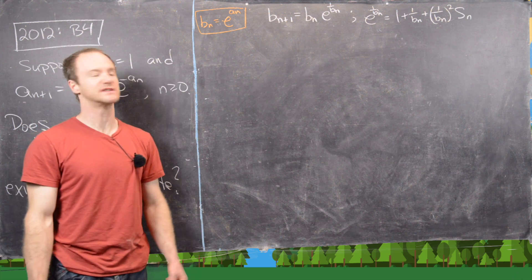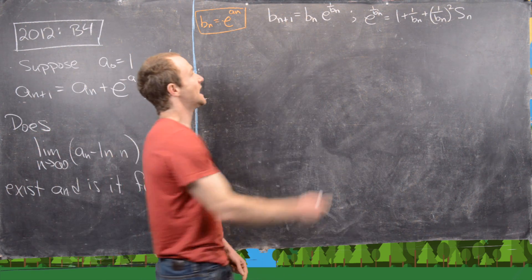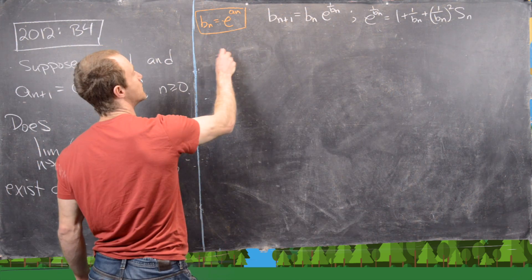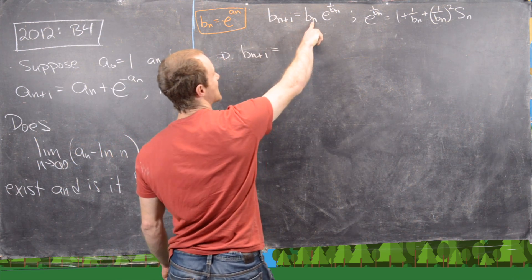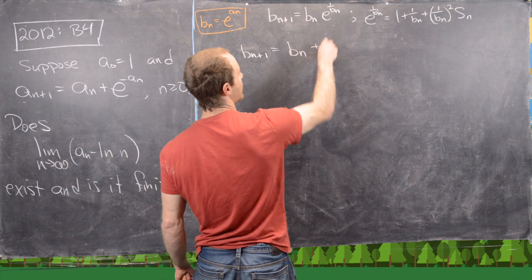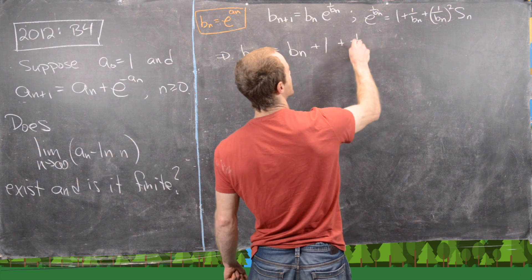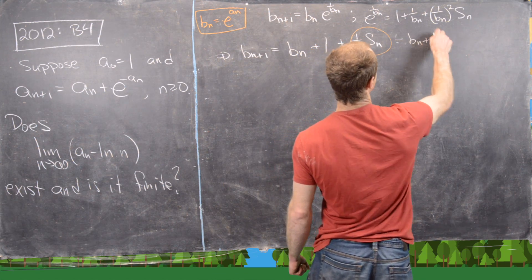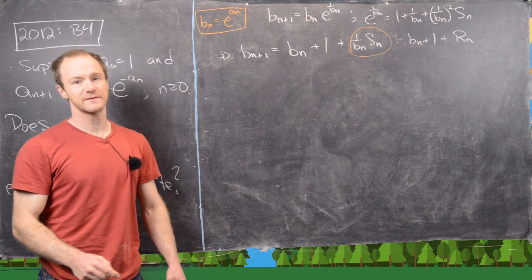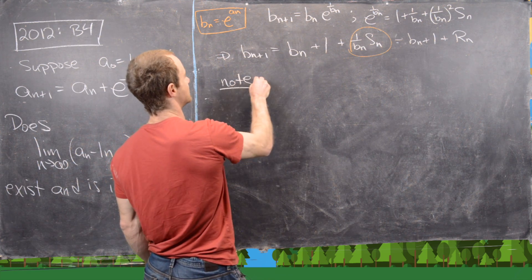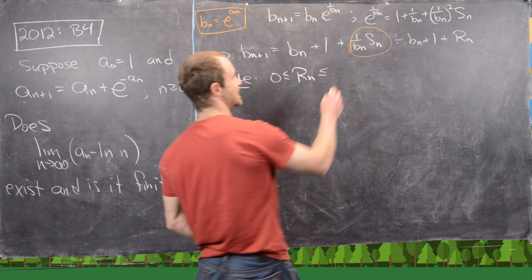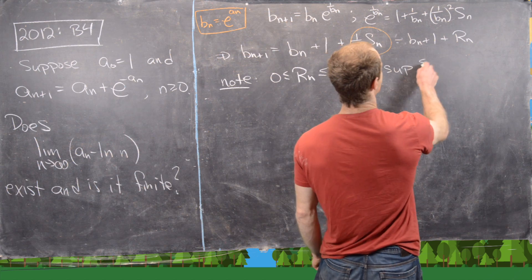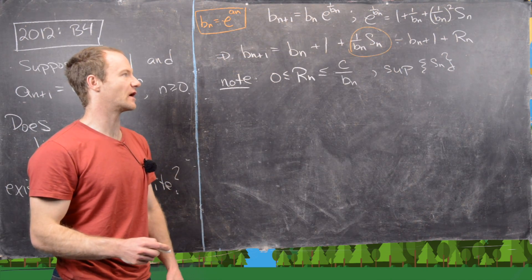So far we've defined the companion sequence b_n, derived its recursion, and expanded the exponential part as a Taylor series. Combining these, b_{n+1} = b_n · e^{1/b_n} gives b_{n+1} = b_n(1 + 1/b_n + S_n/b_n^2) = b_n + 1 + (1/b_n) · S_n. Writing the remainder as r_n, we get b_{n+1} = b_n + 1 + r_n. Importantly, r_n is strictly positive and bounded above: 0 < r_n ≤ c/b_n for some constant c, which can be shown to be well-defined.